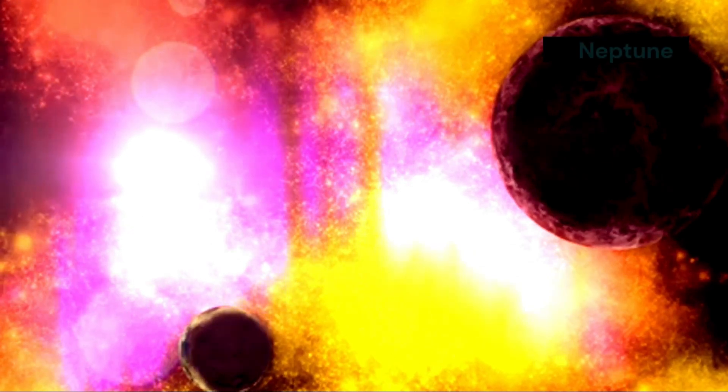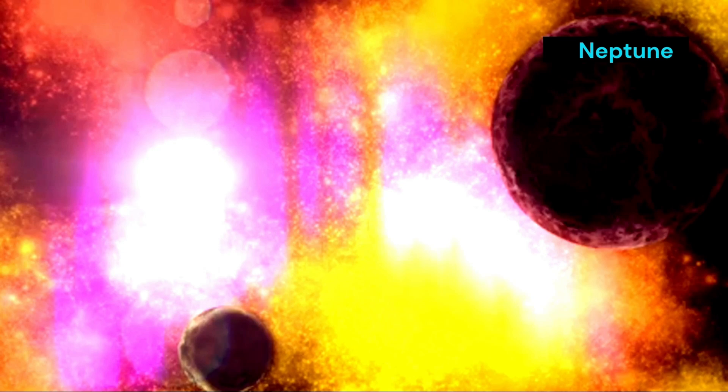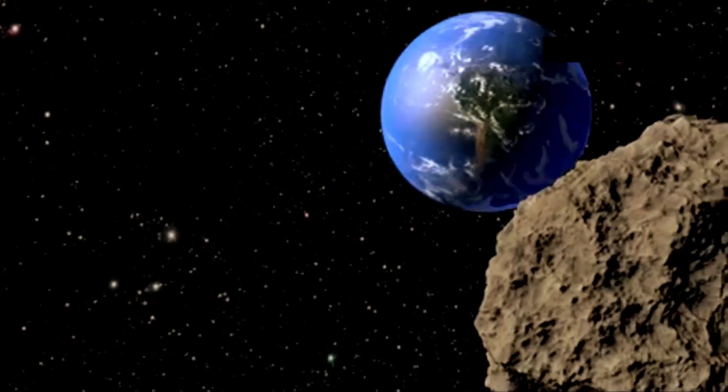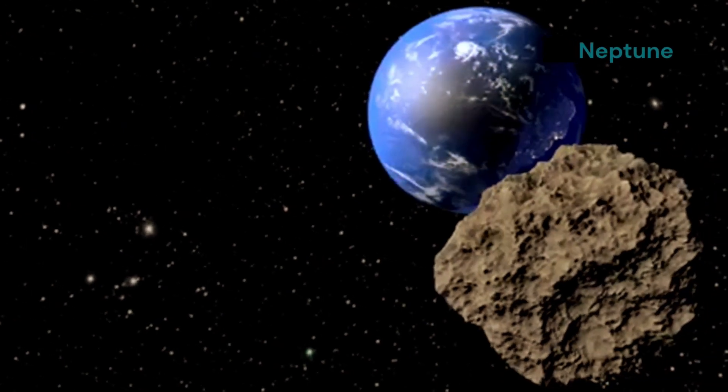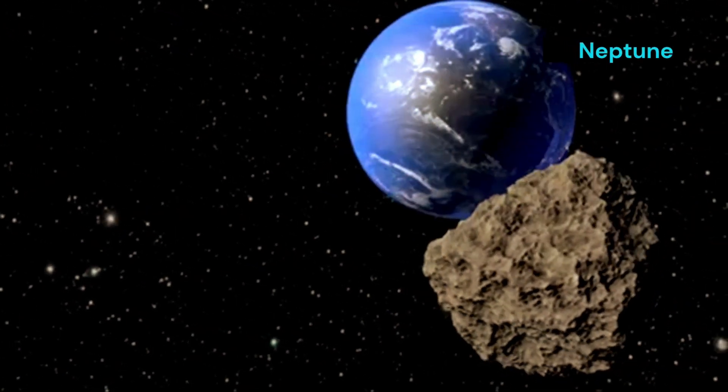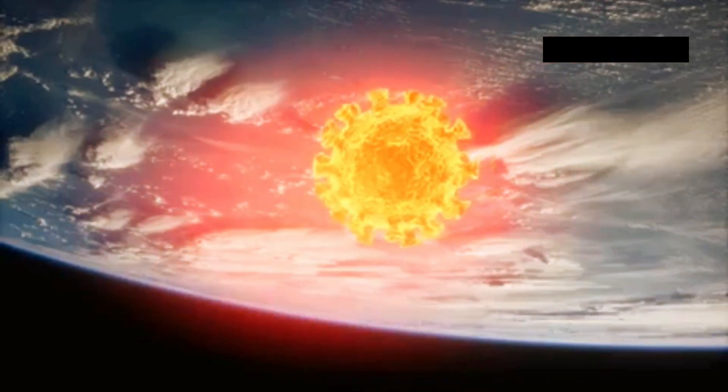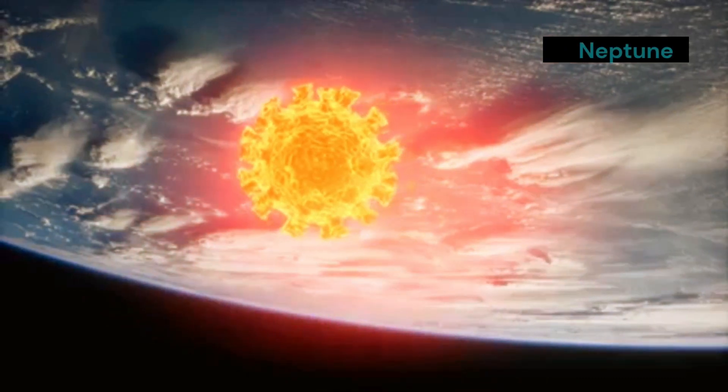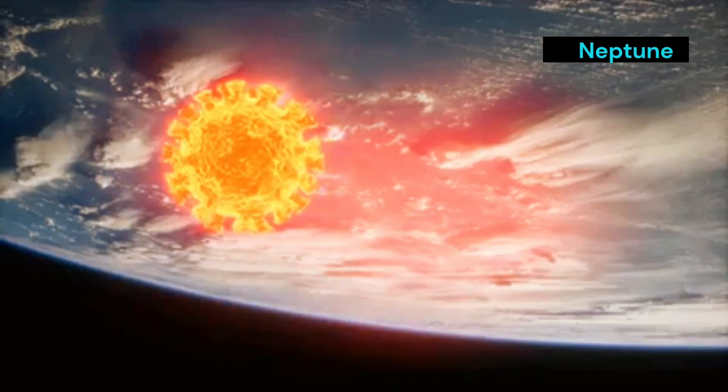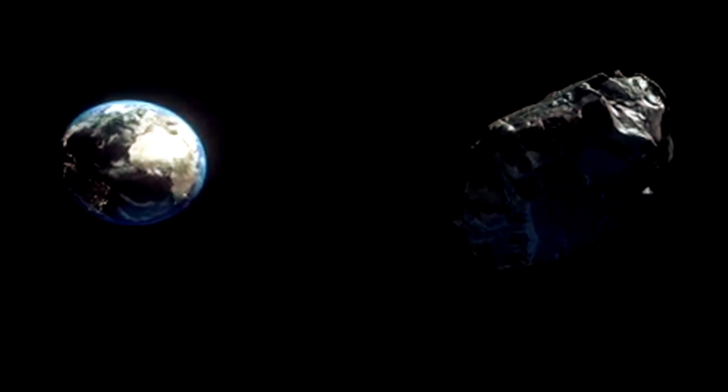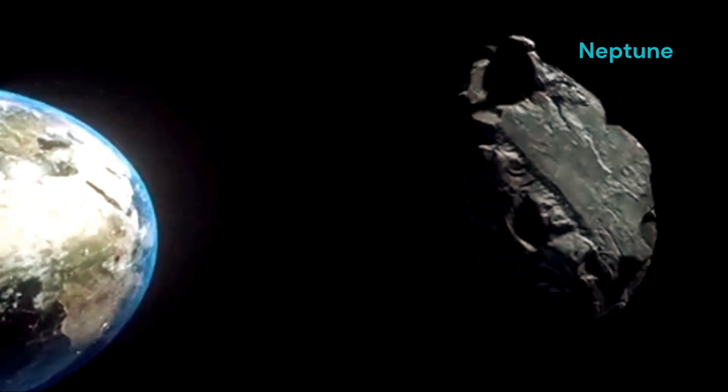Planetary defense: lessons learned and future implications. The collision on Neptune highlights the importance of planetary defense. While we are fortunate that the impactor was relatively small, a larger object could pose a serious threat to Earth. By studying impacts on other planets, we can learn more about the risks posed by asteroids and comets. We can develop strategies to mitigate these risks. Several space agencies are actively tracking near-Earth objects and developing technologies to deflect them if necessary.